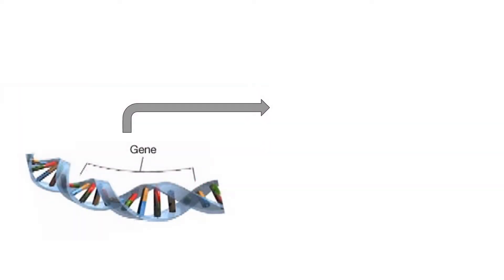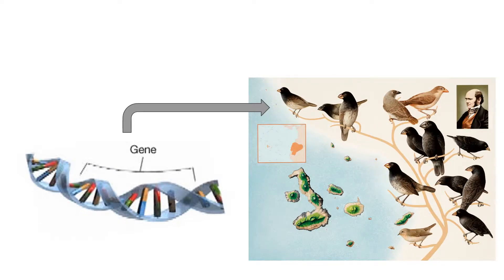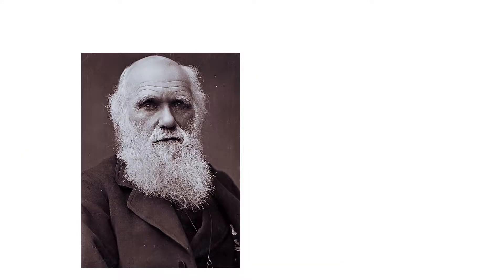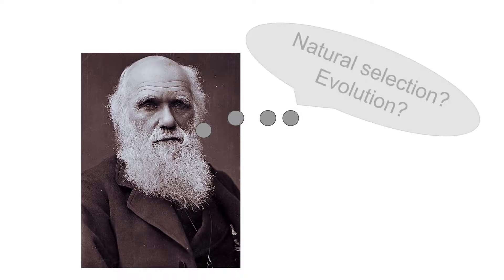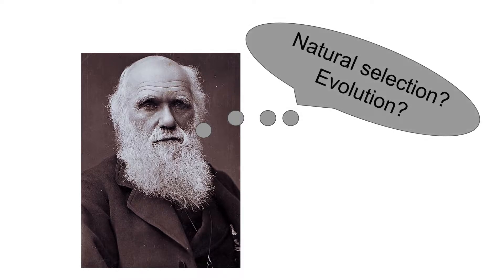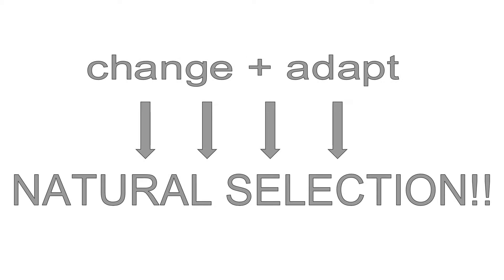Today we are going to talk about genes and how they relate to Darwin's finches. Charles Darwin was a naturalist whose scientific theory of evolution by natural selection became the foundation of modern evolutionary studies. He believed that living things could change over time and adapt to their surrounding environment through a process called natural selection.